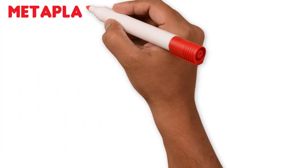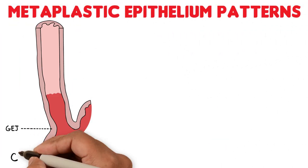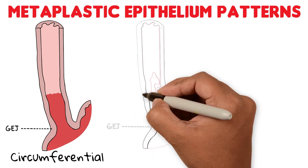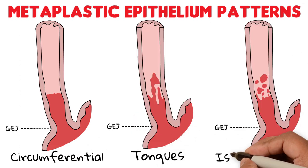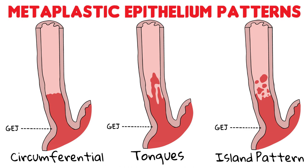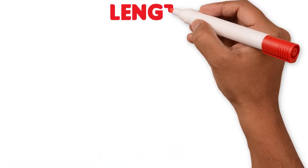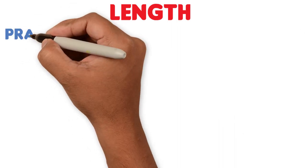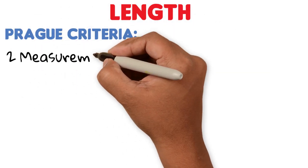This metaplastic columnar epithelium can appear as circumferential, in the shape of tongues, or as an island pattern, meaning that islands of columnar epithelium alternate with squamous epithelium. To record the length of Barrett's esophagus, we use the Prague criteria, which uses two measurements.